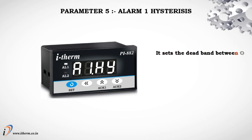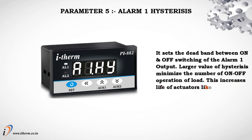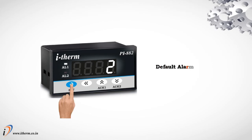Parameter 5: Alarm 1 Hysteresis. This sets the dead band between on and off switching of the alarm 1 output. A larger hysteresis value minimizes the number of on-off operations of the load, increasing the life of actuators like contactors. Default alarm 1 hysteresis value is 2.